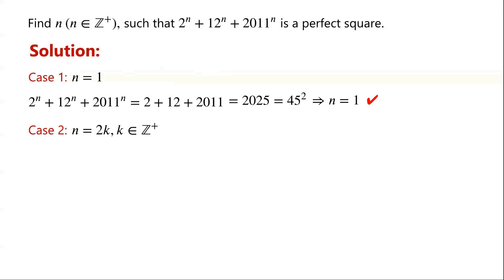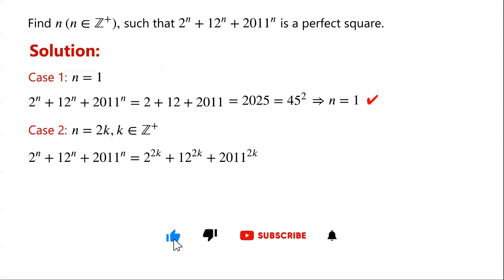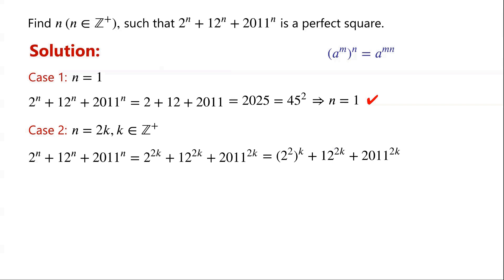Case 2: if n is even. We let n equal 2k, where k is a positive integer. Then 2^n + 12^n + 2011^n equals 2^(2k) + 12^(2k) + 2011^(2k). Using the power rule, 2^(2k) equals (2²)^k equals 4^k. As 4 is congruent to 1 modulo 3, so 4^k is congruent to 1 modulo 3.